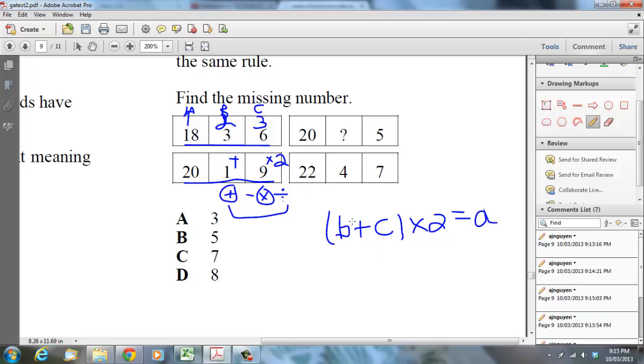This is basic algebra, using notation to represent a number. So B should be this number here, C would be this number here, and A would represent this number here. And let's test it. 4 plus 7 is 11, times 2 is 22. So you know that's the relationship that holds.